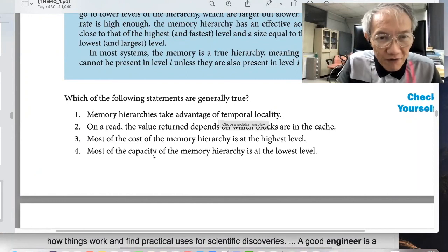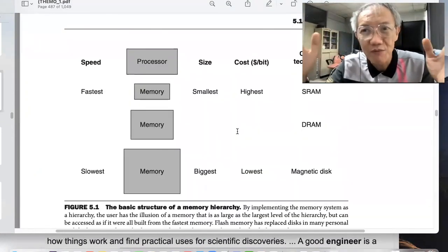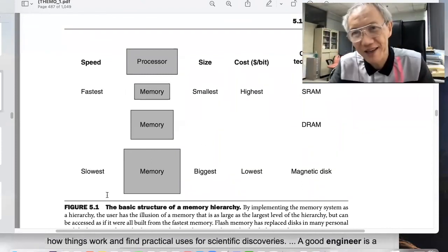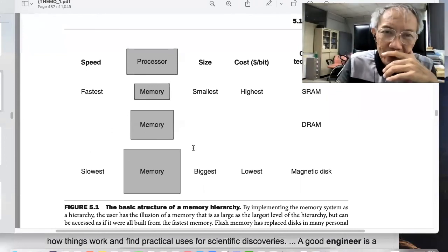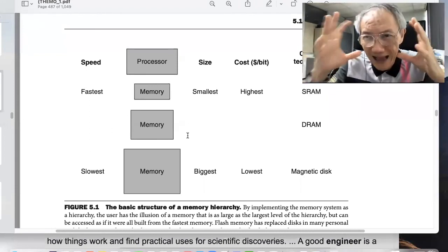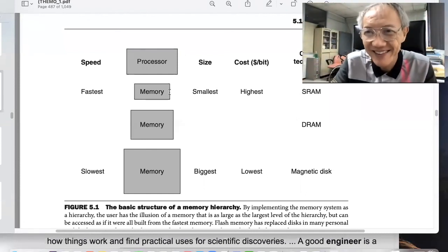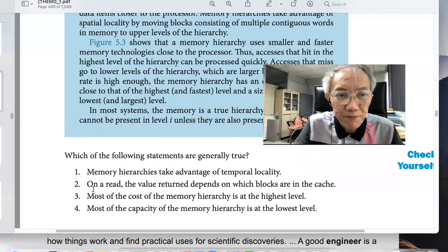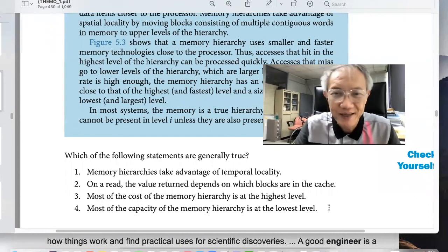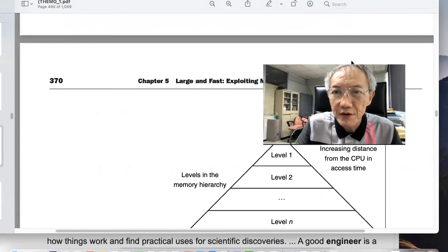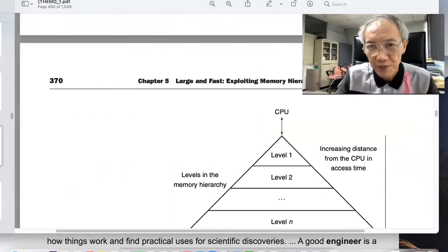Then another last question. Most of TAPAC's memory are at the lowest level. When we saw memory hierarchy, you refer to picture 5.1. So most of the, you can see most of the capacity is at the highest level, not the lowest level. The lowest, the smallest, and the fastest. The last question is definitely false.